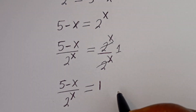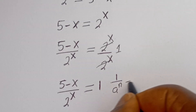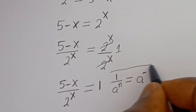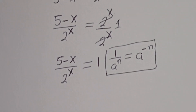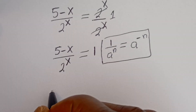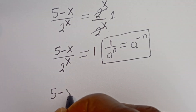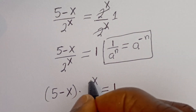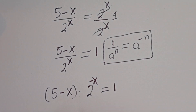Take note that if you have 1 divided by a to the power of n, this is equal to a to the power of minus n. Then this can be written as 5 minus x multiplied by 2 to the power of minus x is equal to 1.